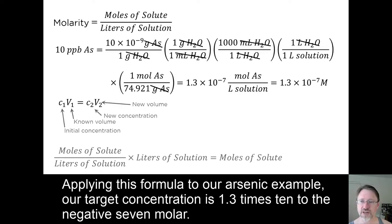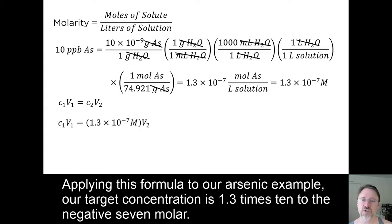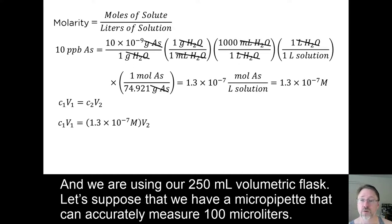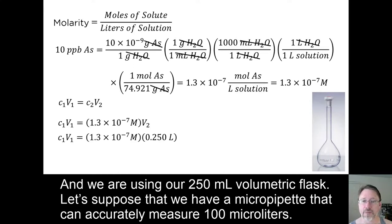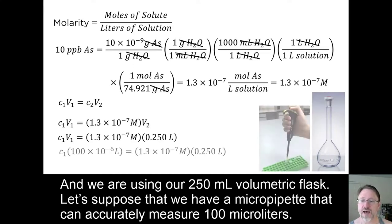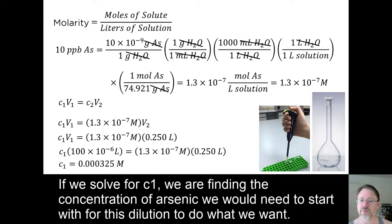Applying this formula to our arsenic example, our target concentration is 1.3 times 10 to the negative 7 molar. And we are using our 250 milliliter volumetric flask. Let's suppose that we have a micropipette that can accurately measure 100 microliters. If we solve for C1, we are finding the concentration of arsenic we would need to start with for this dilution to do what we want.